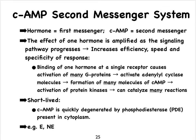Second messenger systems such as cyclic AMP can be short-lived because cyclic AMP is quickly broken down by an enzyme called PDE, or phosphodiesterase, which floats around in the cytoplasm. Examples of hormones that depend on this mechanism include epinephrine and norepinephrine, which very much depend on the cyclic AMP second messenger system.